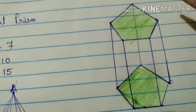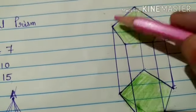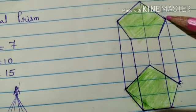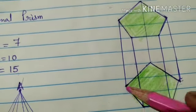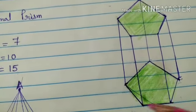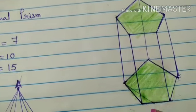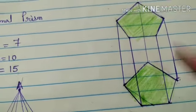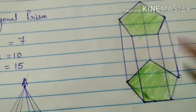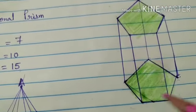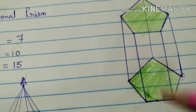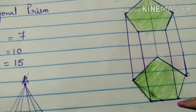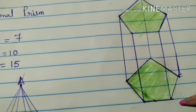How many vertices are there? So counting: 1, 2, 3, 4, 5 points on one face. Then 6, 7, 8, 9, 10 on the other. So total 5 points here and 5 points here — these are congruent. So 5 plus 5, it is 10 vertices.